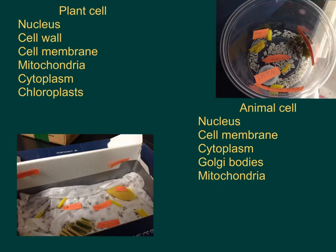In an animal and plant cell, the mitochondria generates chemical energy. The cytoplasm contains molecules such as enzymes, which are responsible for breaking down waste. The chloroplast is only in a plant cell, and it produces the food for the plant.